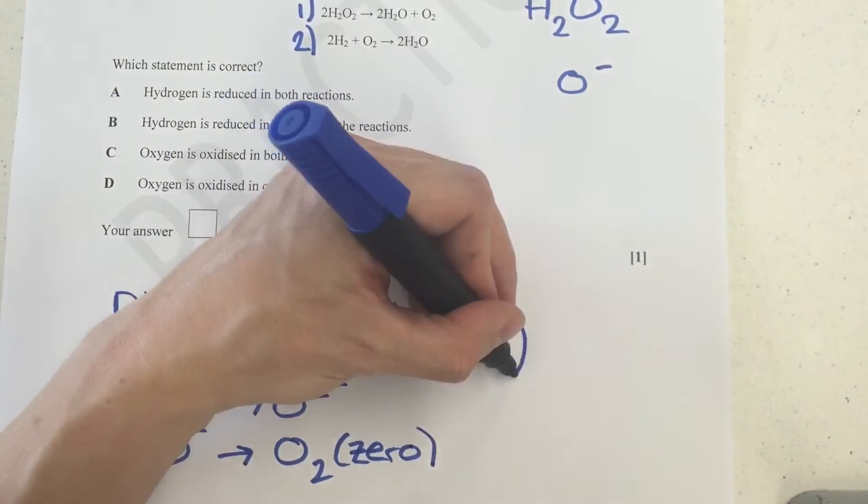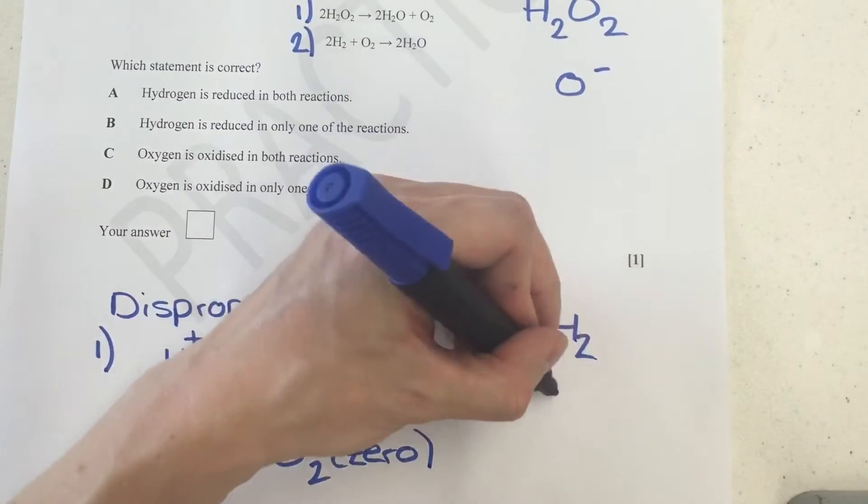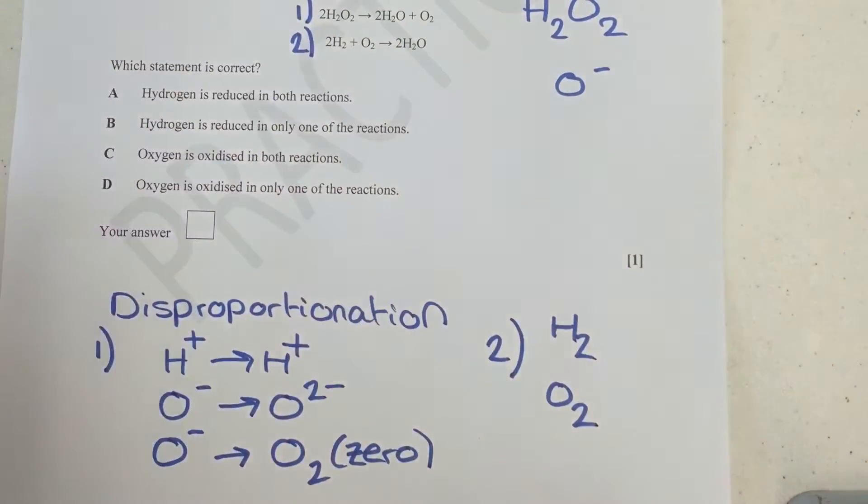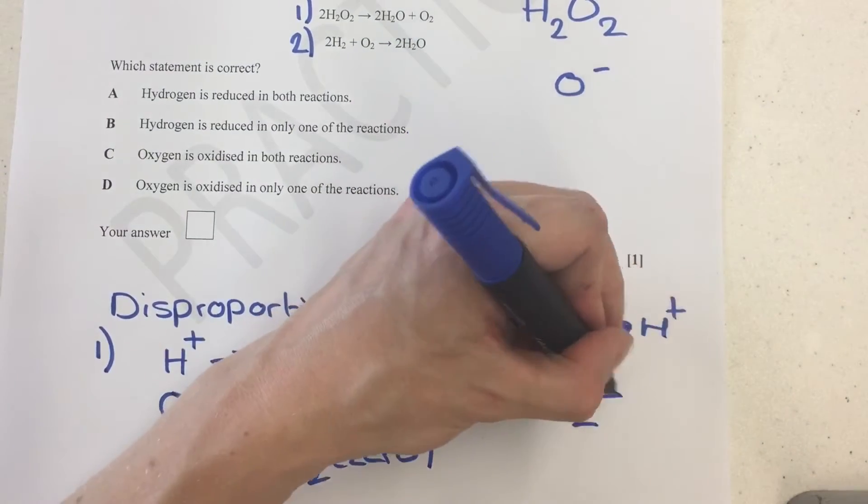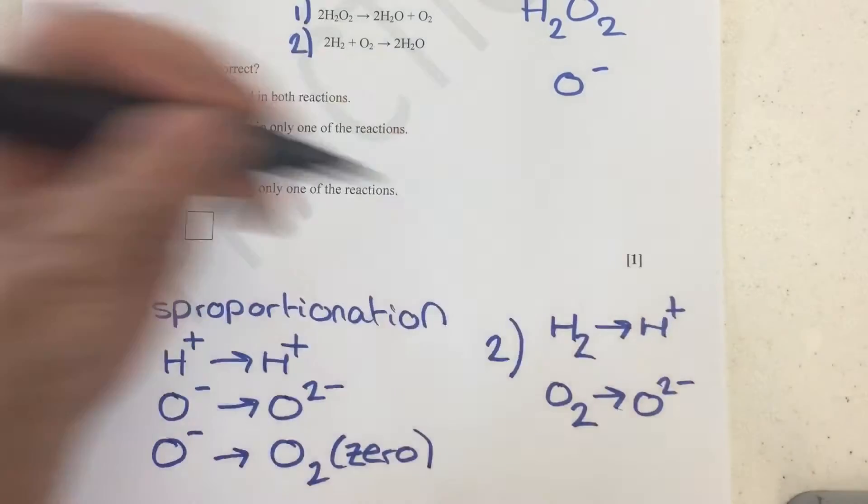If we look at equation two, we start off with H2 and O2, which are both going to be zero, and the hydrogen forms H+ ions, and the oxygen forms O2- ions.